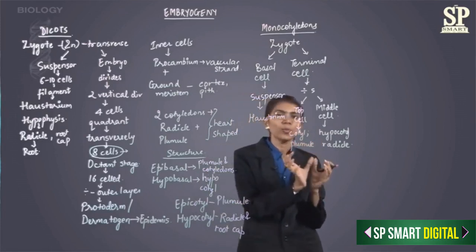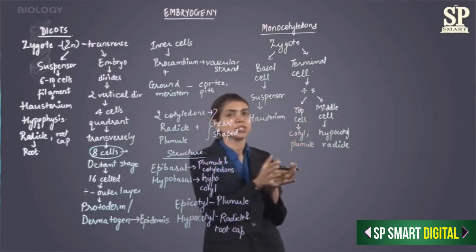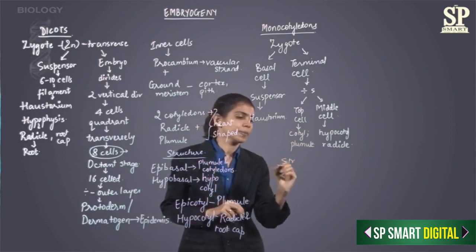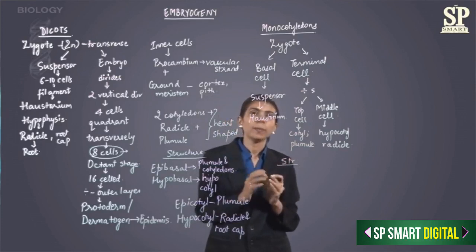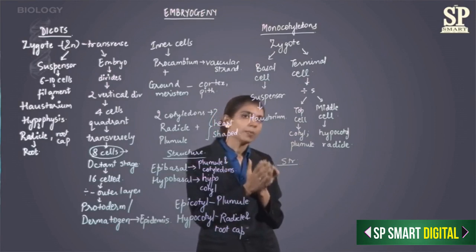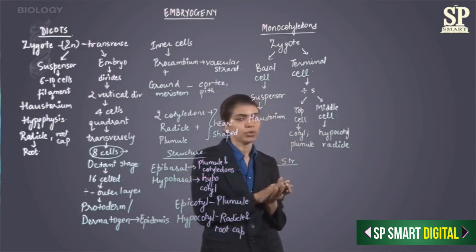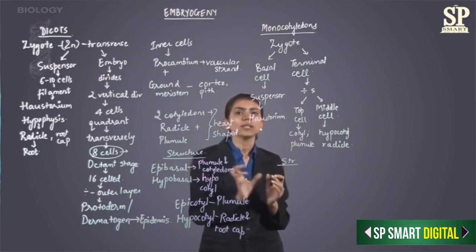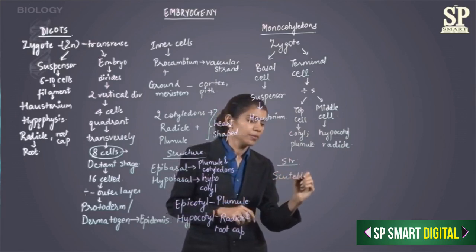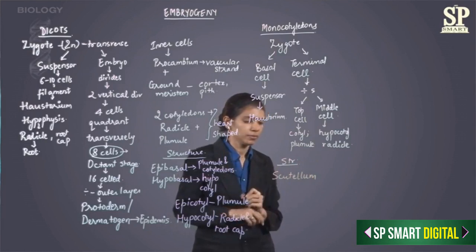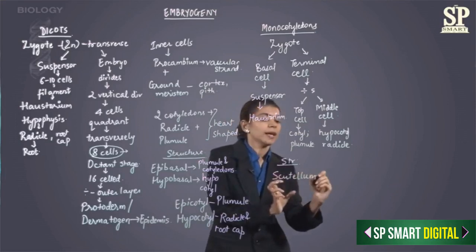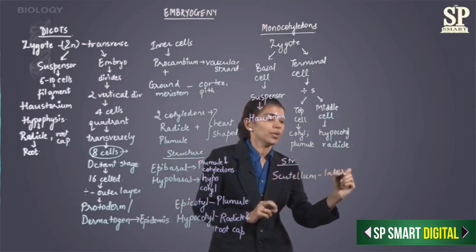This is how embryogeny takes place in monocots. Now coming to the structure of the embryo in monocots: the part of the embryonal axis above the cotyledon is the epicotyl and the part below is the hypocotyl. Here in monocots, the cotyledon is called the scutellum. This lies lateral to the embryonal axis.